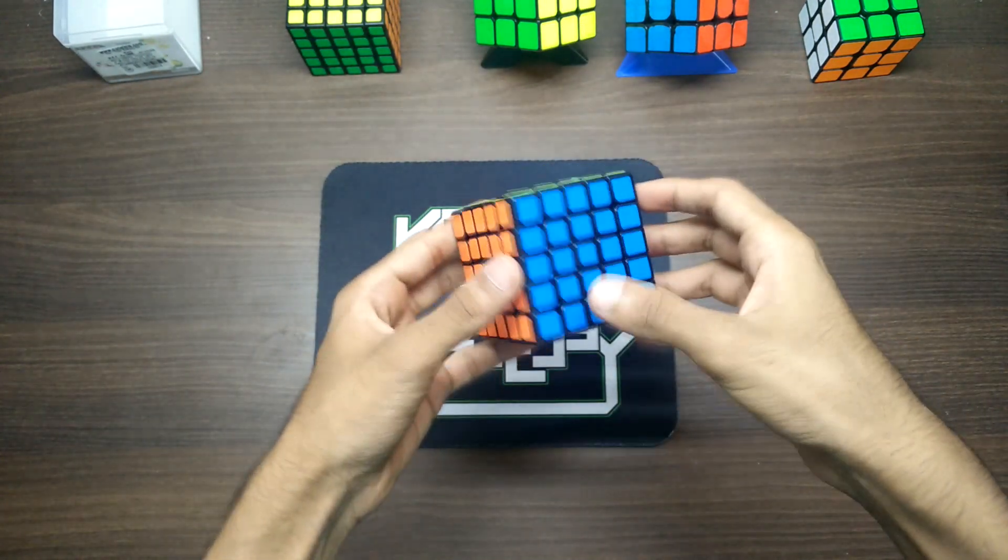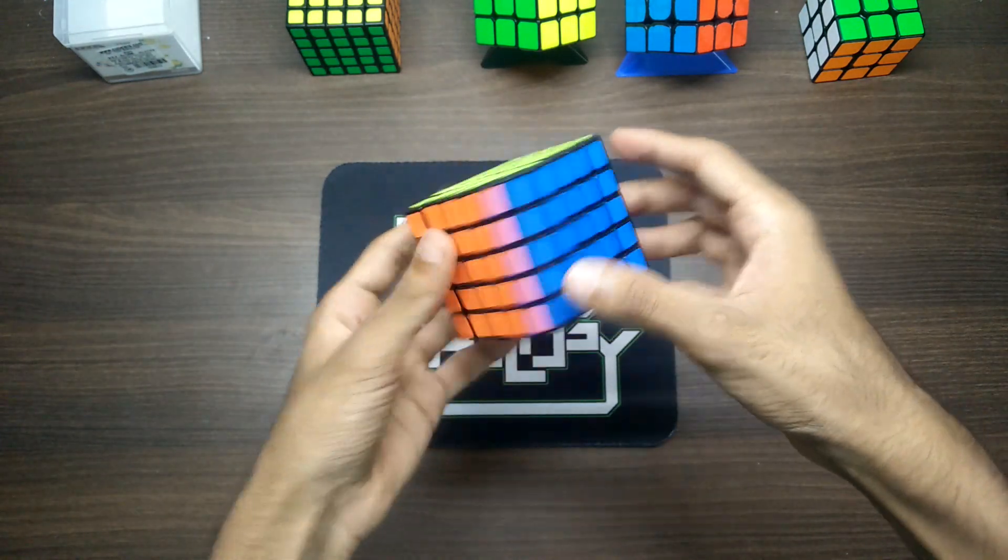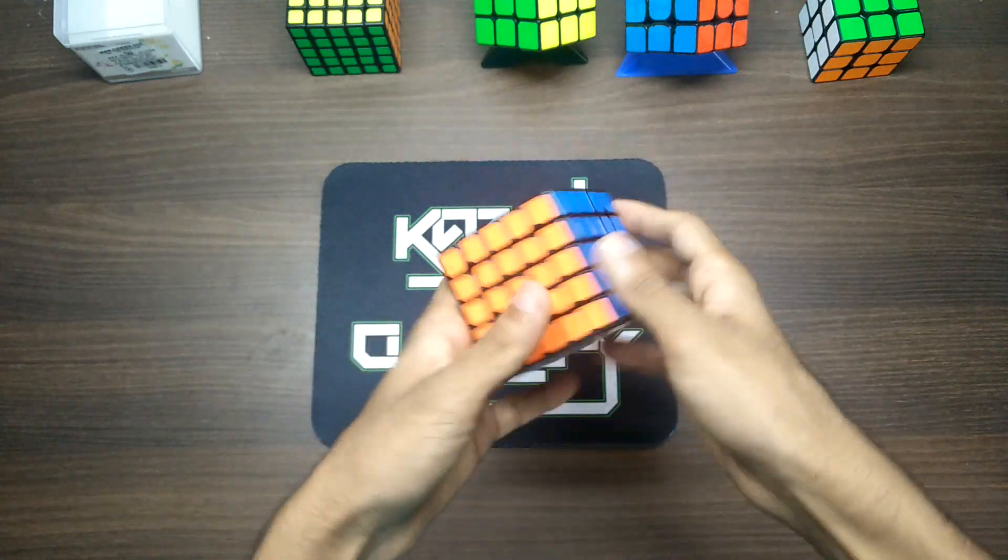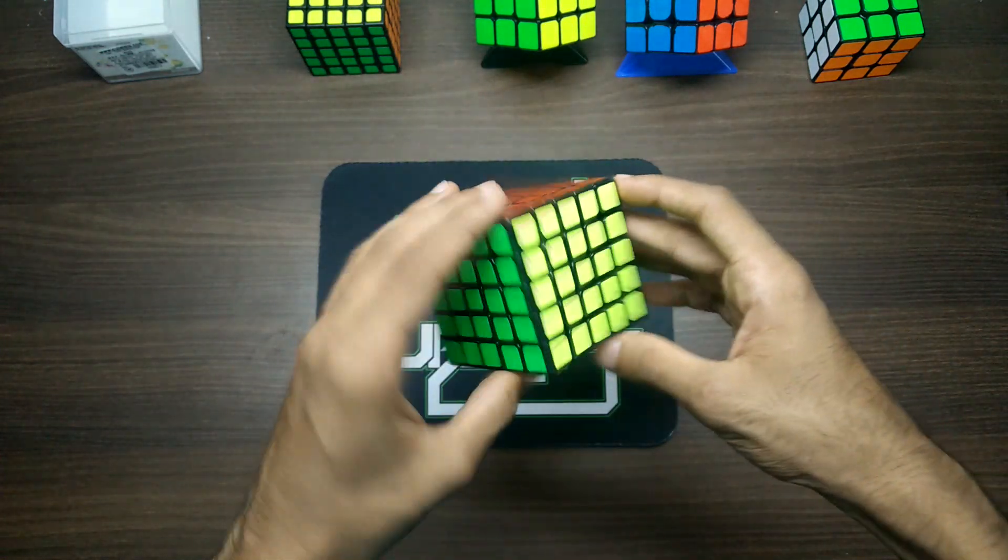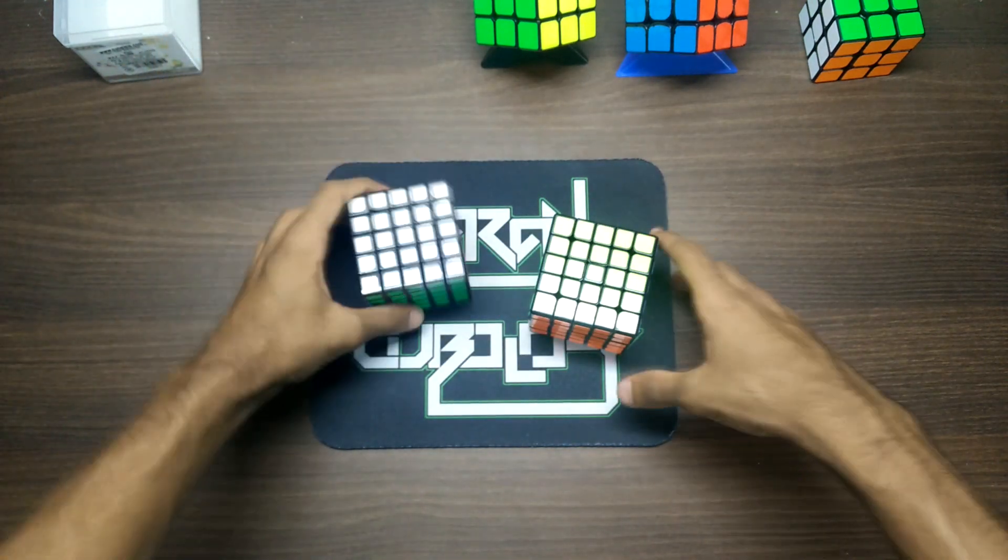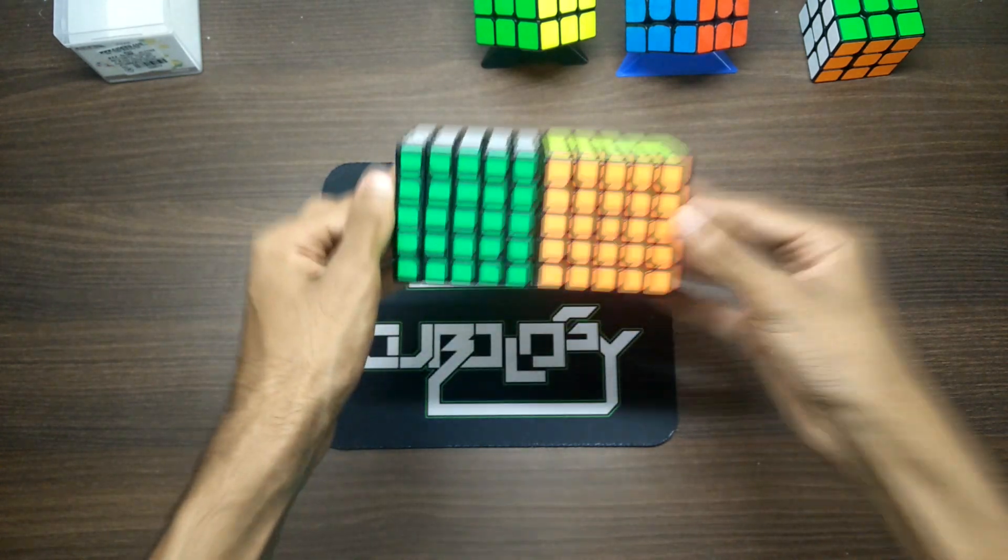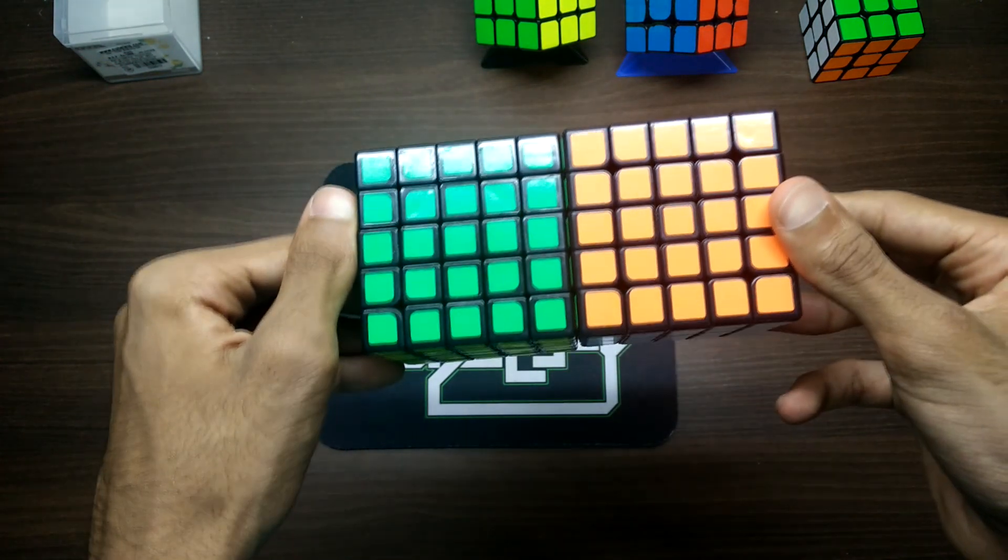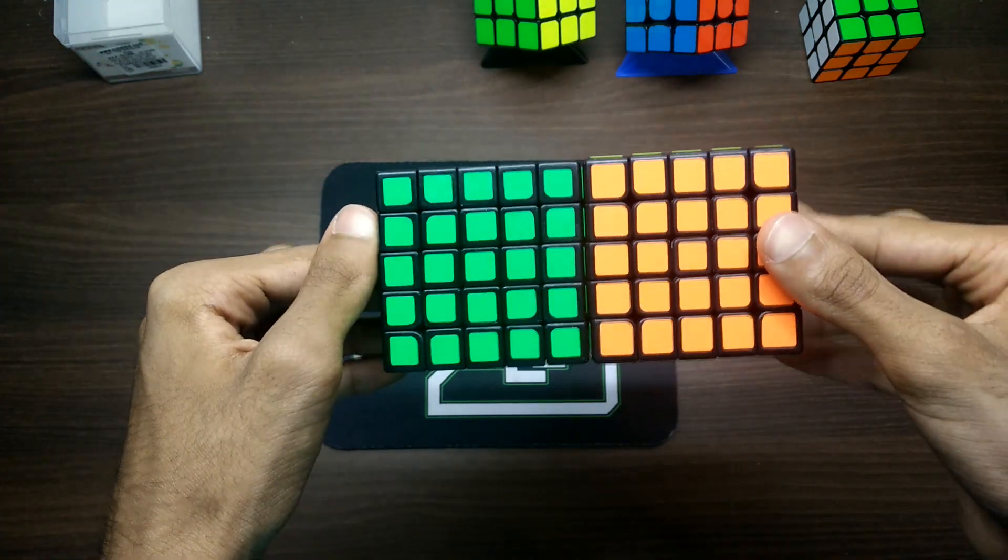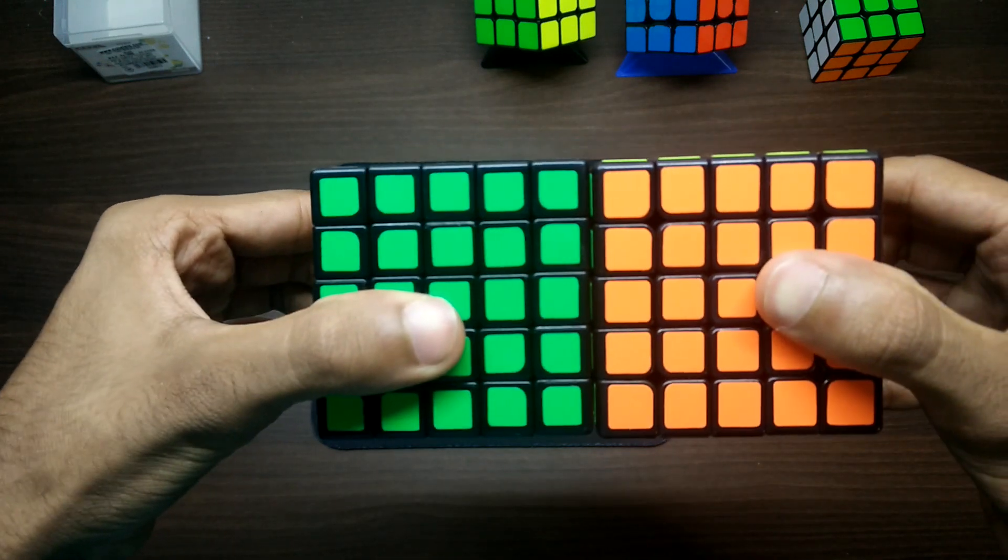The shades are pretty good. These look a lot like the MoYu shades, but blue is definitely better. Orange also has a slight difference. Let me grab my Shang Shao 5x5 for a size comparison real quick. It's about the same size, just a bit bigger maybe. Actually, I don't know, maybe not.